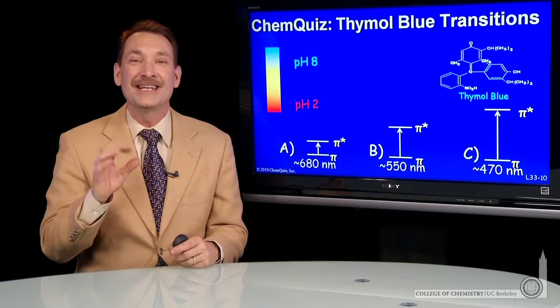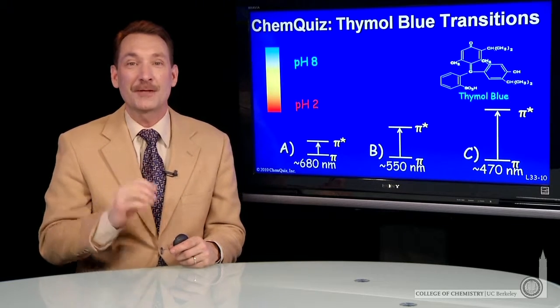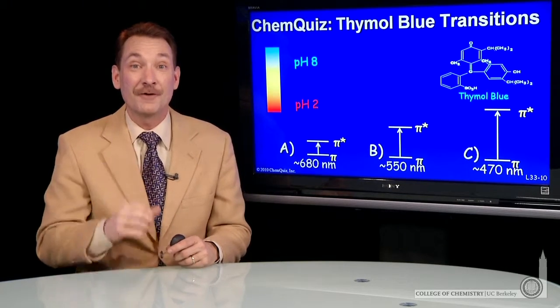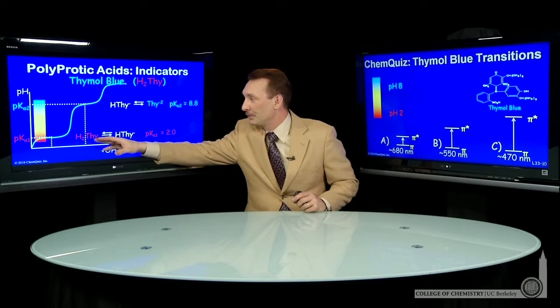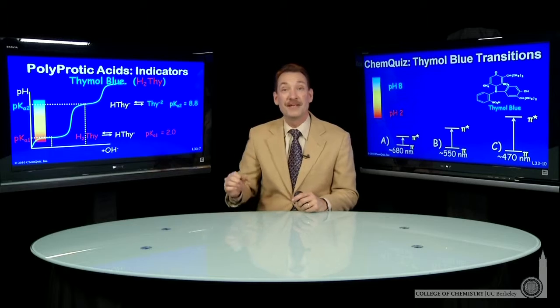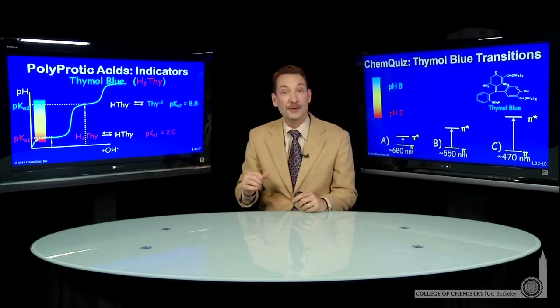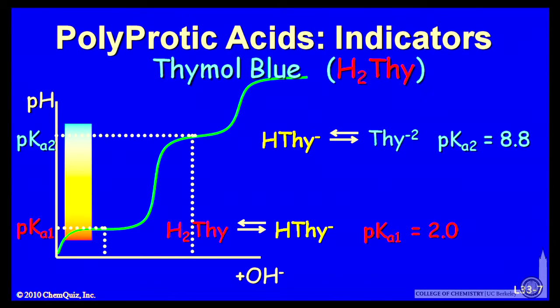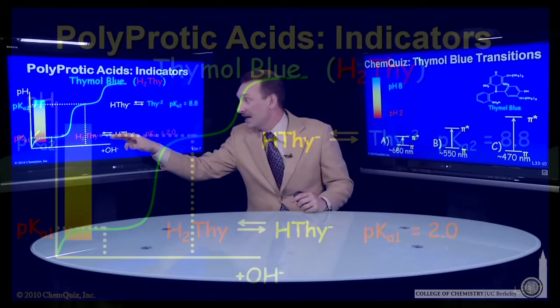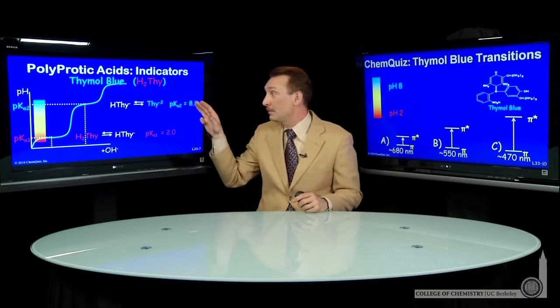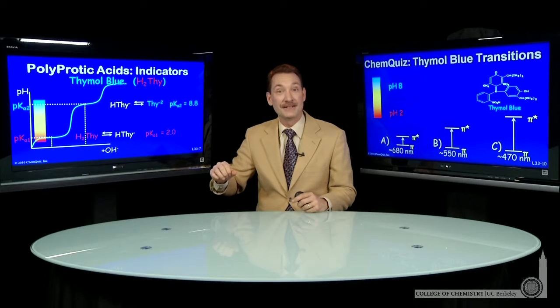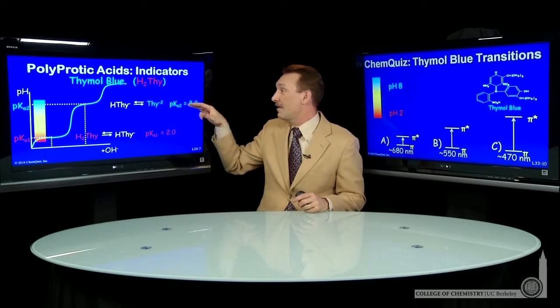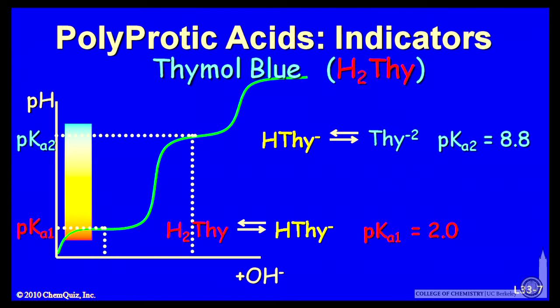We're looking at the indicator thymol blue, which is a polyprotic acid with several color variations. Thymol blue is red at pHs below 2, where the first proton titrates. At pHs above 2 but below 8, the yellow form predominates. At pHs above 8, you remove both protons, and the blue form predominates.